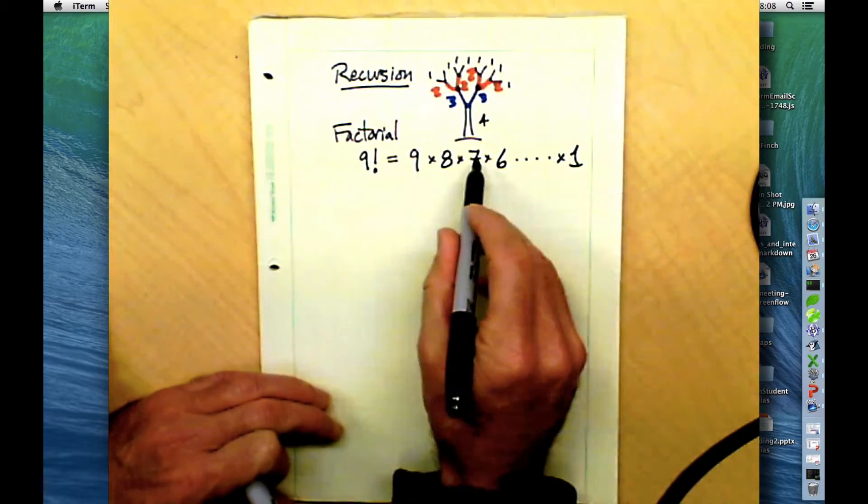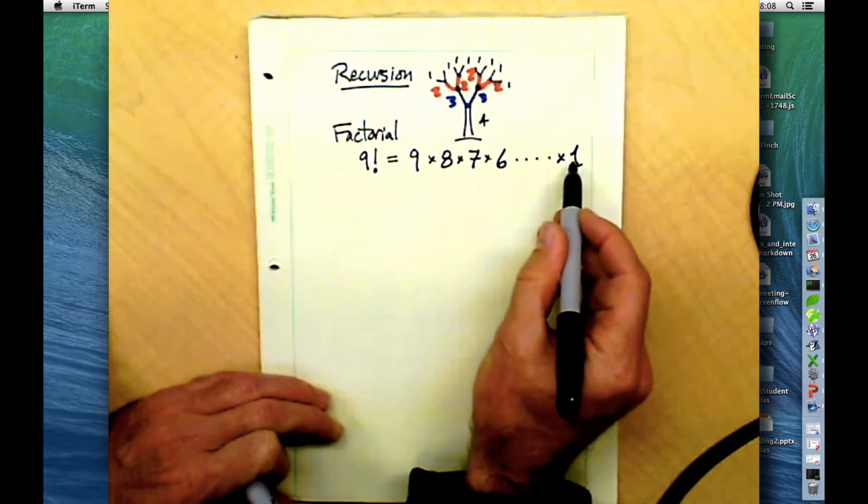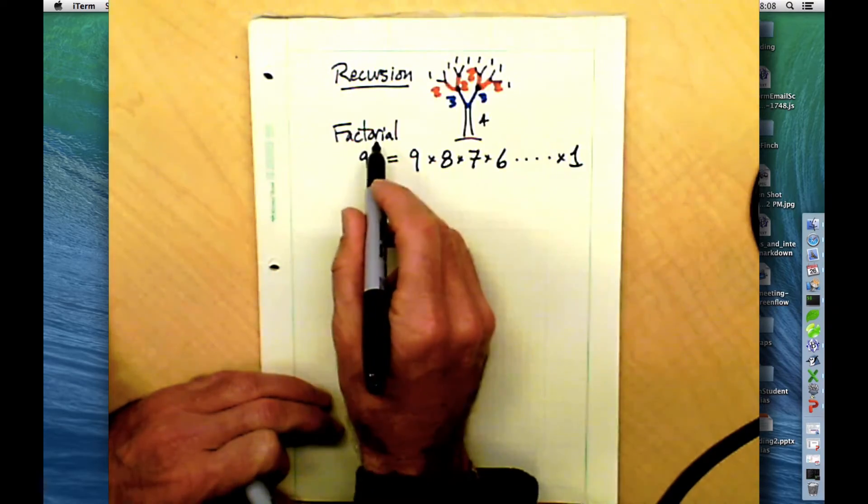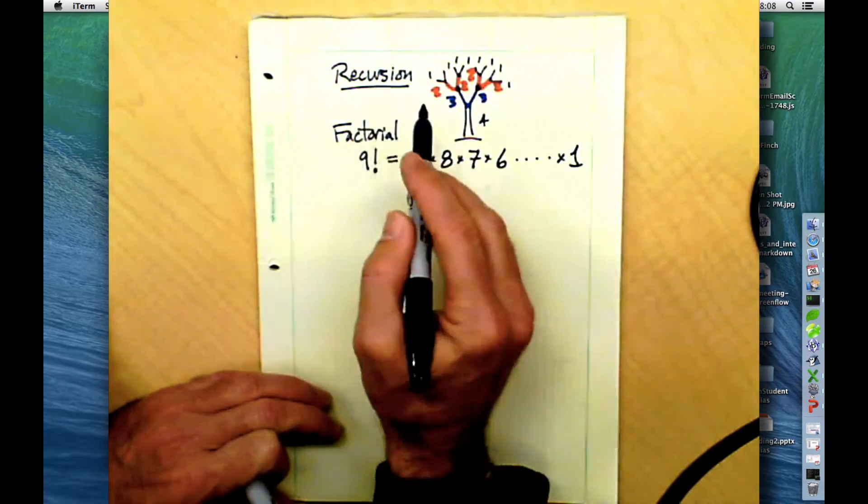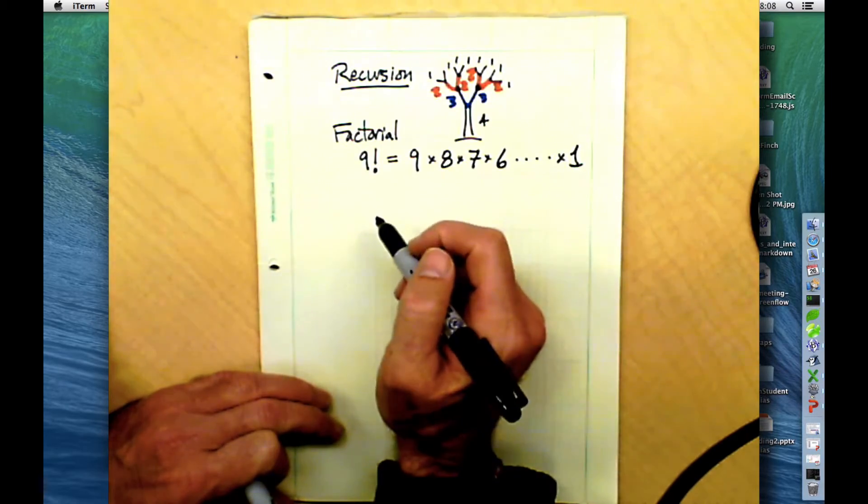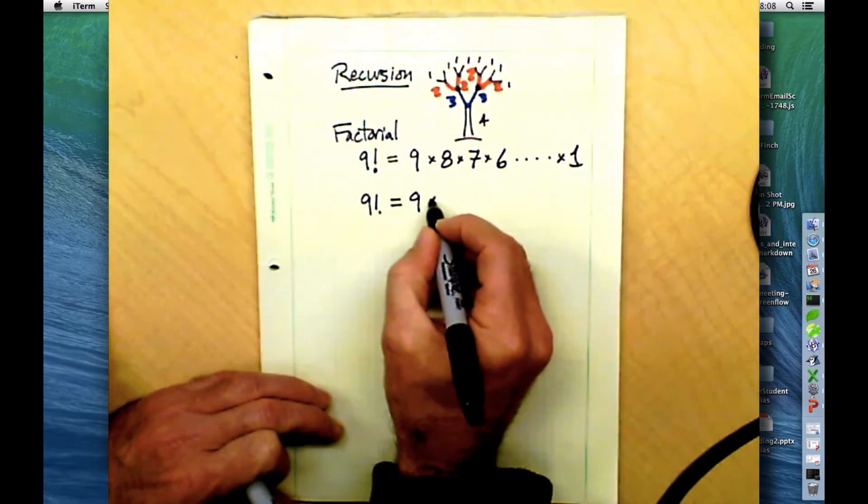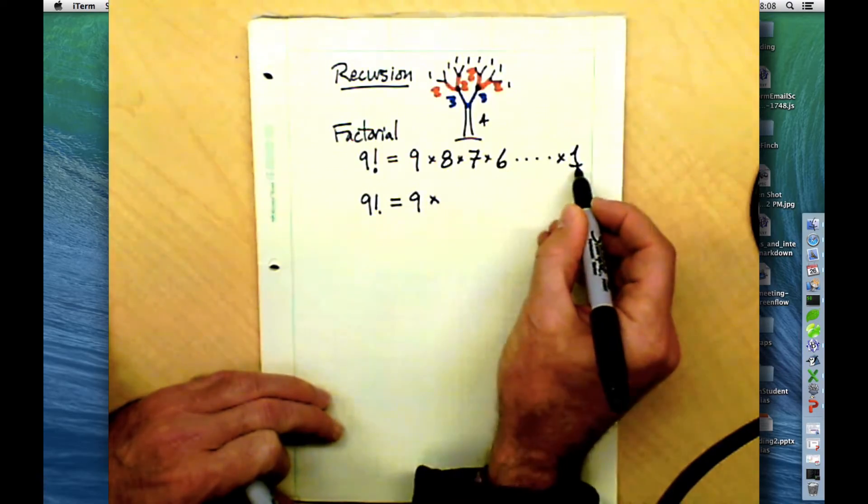Factorials are interesting. We can certainly calculate this on a calculator. We could plug those into a calculator and figure out what the answer was. But we can also define factorials recursively. We can think about a factorial in terms of recursion. And that's because nine factorial is actually equal to nine times eight factorial.